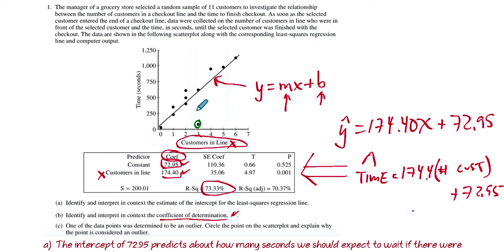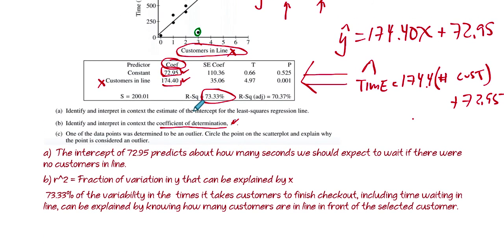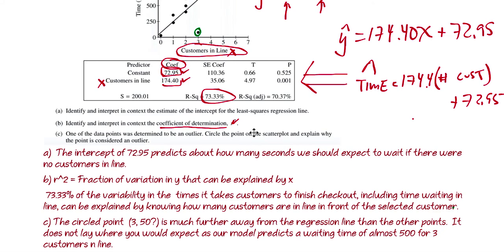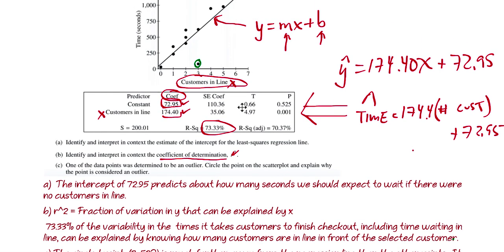Like it should be up here, right? So that's furthest away from the predicted value. So how are we going to write that up? So here's how I wrote it out. But the circle point, which is 3 50, I'm estimating right here. Is that about 50? I don't know. Is much further away from the regression line than the other points. It does not lay where you would expect as our model predicts a waiting time. So I'm going to be really specific here. Our model predicts for three customers, it should be up here somewhere.